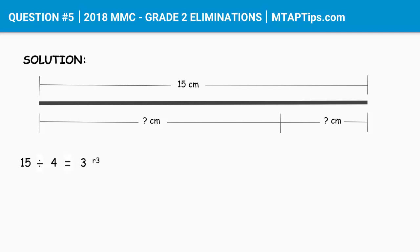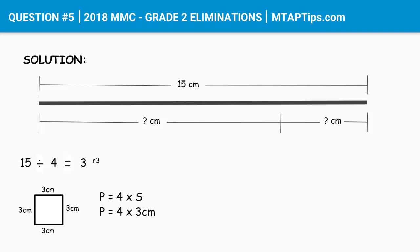From here we can already see the answer, but I'll elaborate to explain it further. This shows that we have a square with a side of 3 cm each. To find the length of rope needed to form this square, we get the perimeter using the formula P = 4 times S. So P = 4 times 3 cm, which gives us 12 cm.